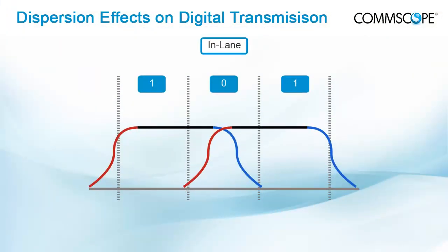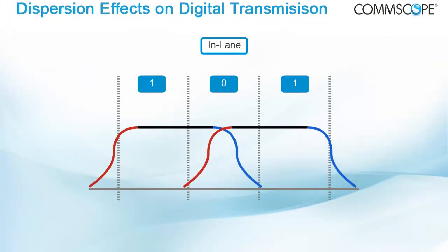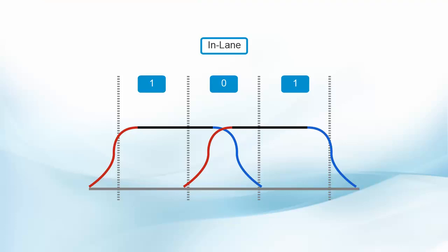In digital transmission, the in-lane problem, too much dispersion, is the spreading of pulses that causes bit errors. Here, the light from the ones disperses into the bit period of the zero to the extent that the receiver mistakes the zero for a one, a bit error. At this point, either regeneration of the signal or compensation for dispersion is required.